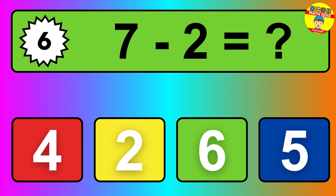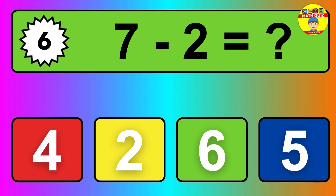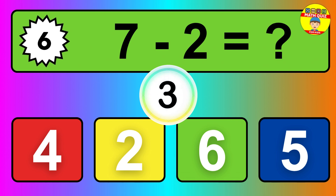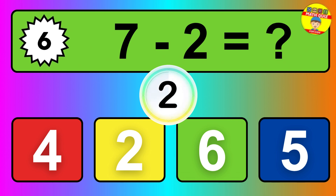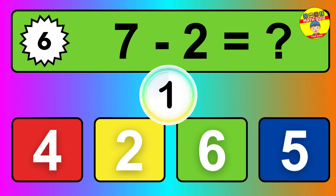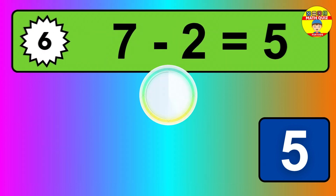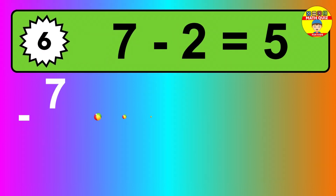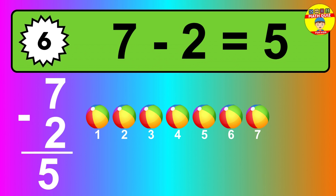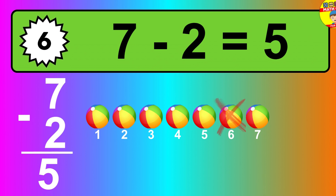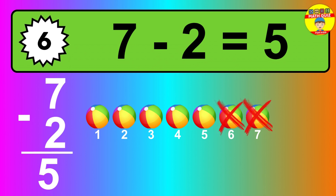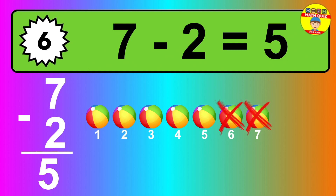Question 6. 7 minus 2 equals what? So the answer is 7 minus 2 is 5. Let's count it. 1, 2, 3, 4, 5.